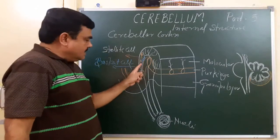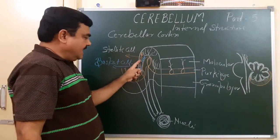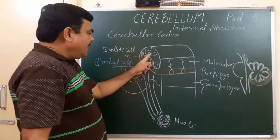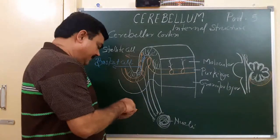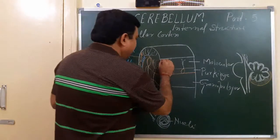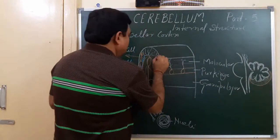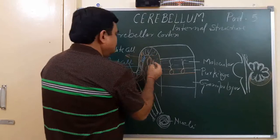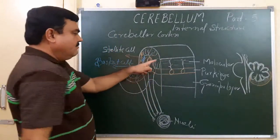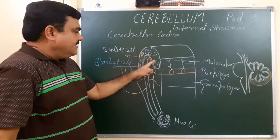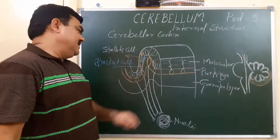So in the molecular layer you have seen: the dendrites of the Purkinje cells, the stellate cells with their star-shaped cell bodies, and basket cells which run transversely. Their cell bodies, dendrites, and axons are visible. The molecular layer also contains parallel fibers which pass through this layer.